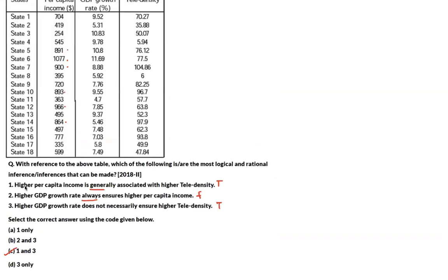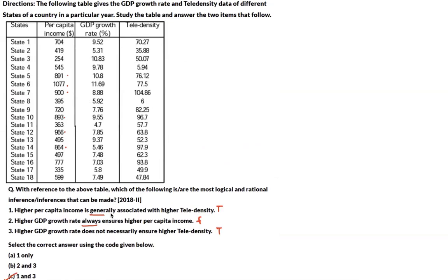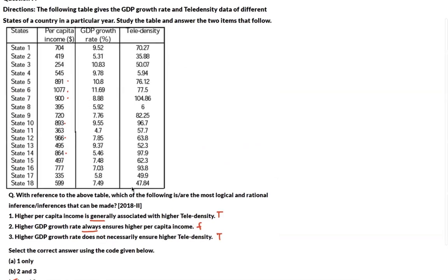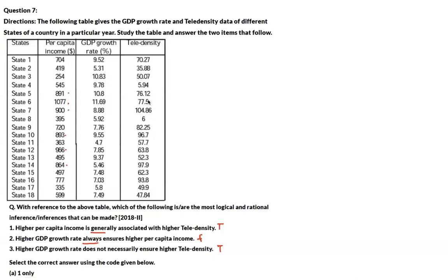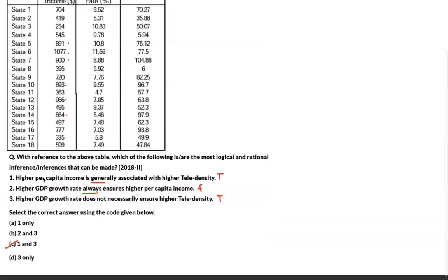A second set of statements on the same data: Statement 1 says higher per capita income is generally associated with higher tele-density. Correlating the figures, states with higher per capita income do tend to have higher tele-density, and since it says 'generally' rather than 'always,' this is true. Statement 2 says higher GDP growth rate always ensures higher per capita income — the word 'always' makes this false. Statement 3 says higher GDP growth rate does not necessarily ensure higher tele-density — a general, non-absolute statement, so this is true. Statements 1 and 3 are correct.